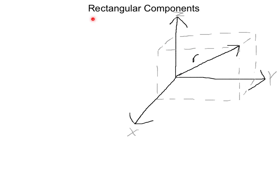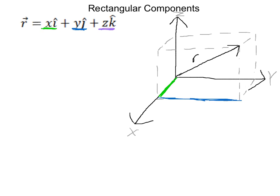Now we're going to talk about rectangular components. We have a graph with x, y, and z axes and a vector r. We're going to characterize this vector r with rectangular components, so r equals a component in the x direction, a component in the y direction, and a component in the z direction. You can go in the x direction, then the y direction, then the z direction to characterize your particle.